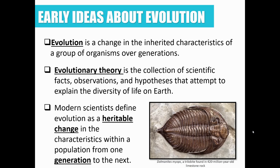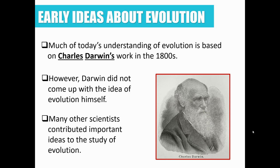We need to have a good definition for evolution. The definition will vary a little bit depending on the topic, but overall it is a change in the inherited characteristics of a group of organisms over generations. Importantly, individuals do not evolve — entire populations evolve, and this takes generations. Evolutionary theory is a collection of scientific facts, observations, and hypotheses that attempt to explain why life is so diverse on planet Earth. Modern scientists define evolution as a heritable change in the characteristics within a population from one generation to the next.